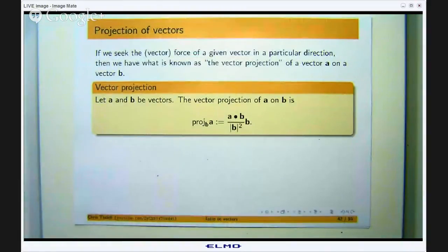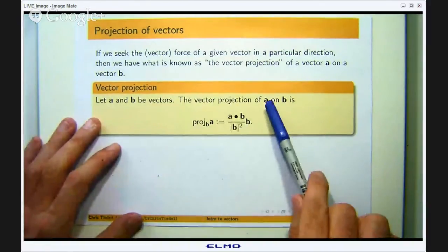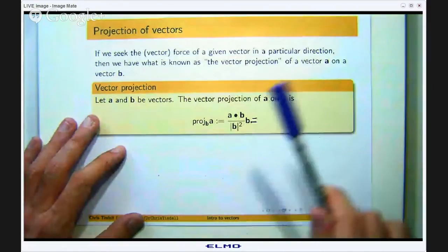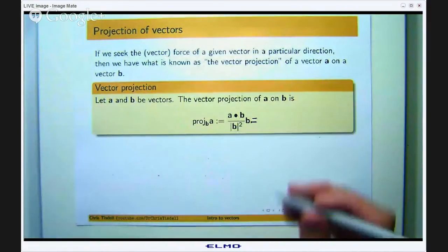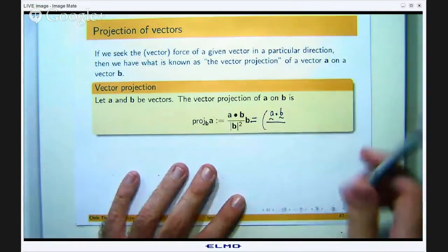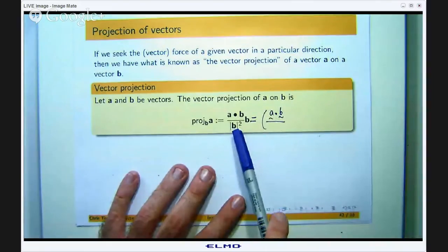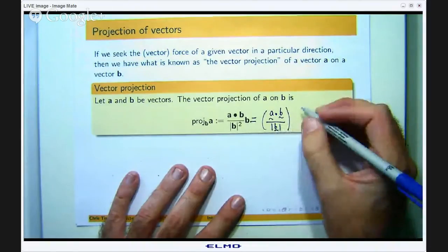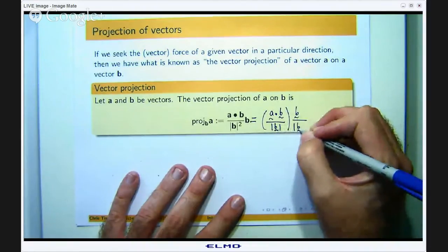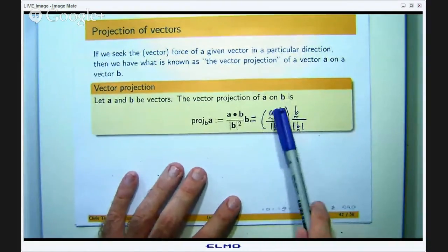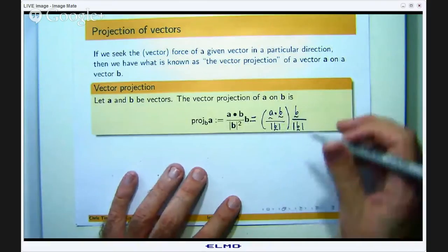We are going to define the projection of vector A on vector B through this. Now this can be unwrapped a little bit to be related to our previous slide. If I take out a factor of the magnitude of B there and shift it out, then I have the following. This is just the scalar projection of vector A on vector B times by a special vector.